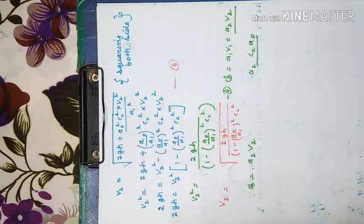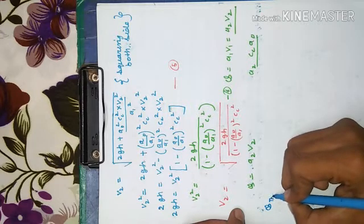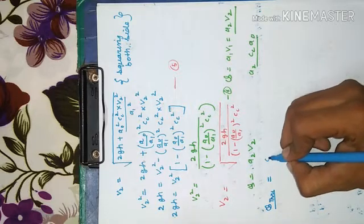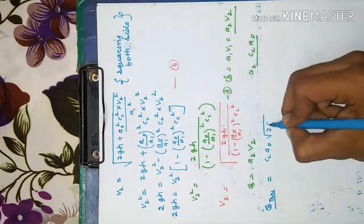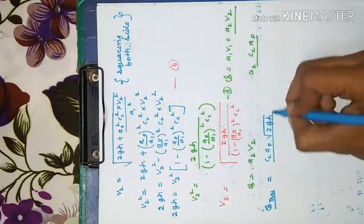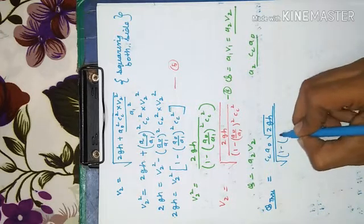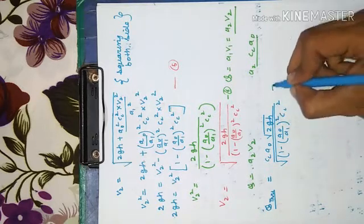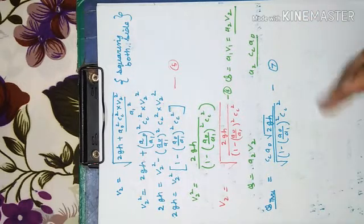Substituting A2 = Cc·A0 and the expression for V2, the theoretical discharge Q = Cc·A0 · √(2gh) / √[1 minus (A0/A1)²·Cc²]. This is our equation number 7. This is the theoretical discharge value.